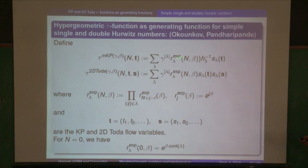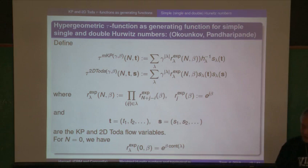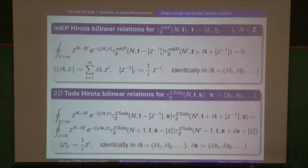You put that in as the coefficient for the single Schur function or the double Schur function expansion, and mirabile dictu, these are tau functions — they satisfy the Hirota bilinear equations. Just in case you haven't seen them: this is a residue form of the modified KP. If you set n equal to zero, that's just the KP Hirota equation, which is set to zero.